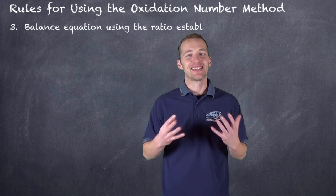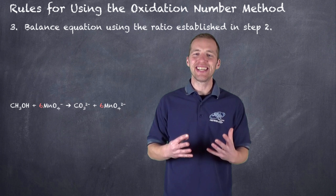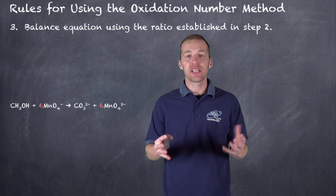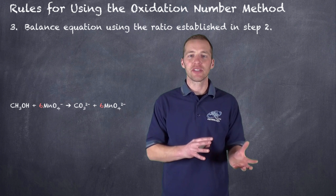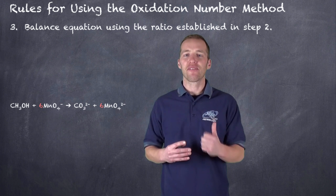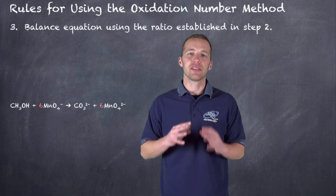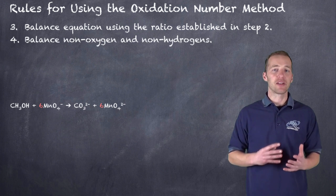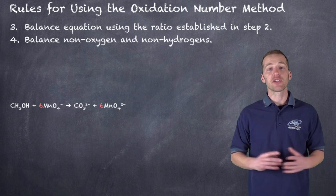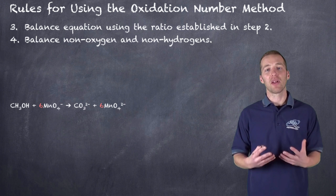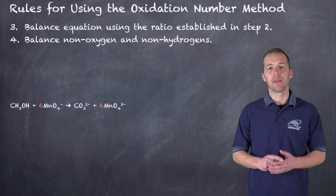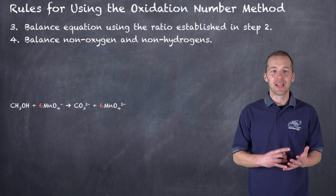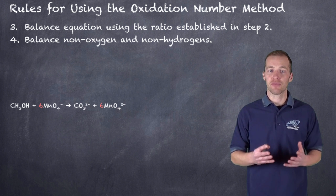We now apply that six-to-one ratio from step two to our equation. Notice this is not the half-reaction method — we have not split this into oxidation and reduction halves, and we haven't started talking about electrons. That ratio step is what really differentiates this approach. After applying it, we balance all non-oxygen and non-hydrogen atoms. In most cases, applying the ratio will already balance those atoms — in our scenario, the manganese and carbon are already balanced.